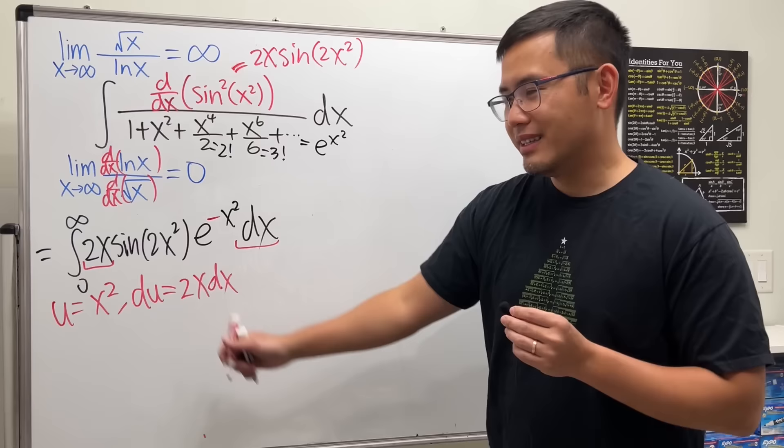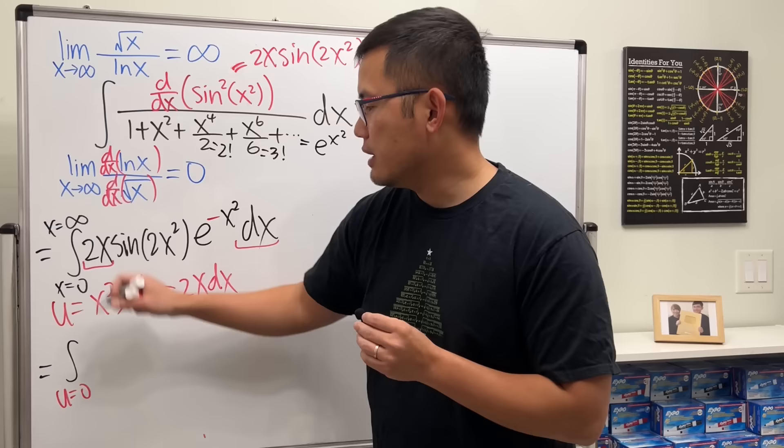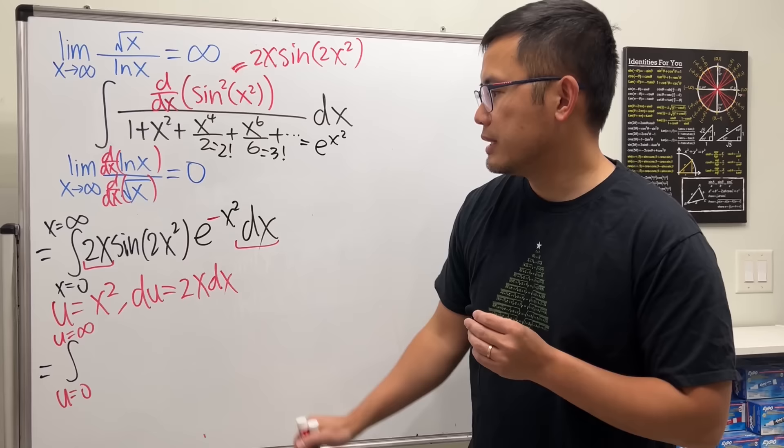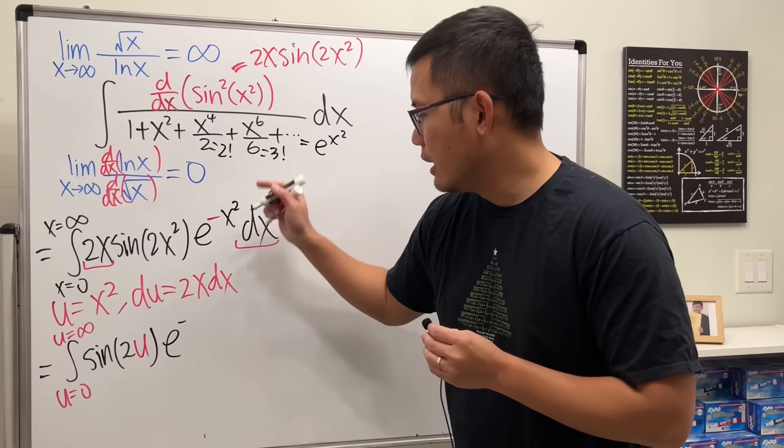When x = 0, u = 0; when x → ∞, u → ∞. The 2x dx term is just du. So the integral becomes the integral from 0 to infinity of sin(2u)·e^(−u) du, and we are now in the u-world.